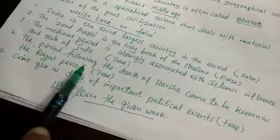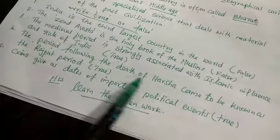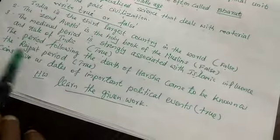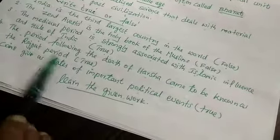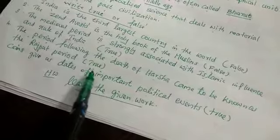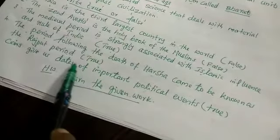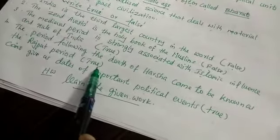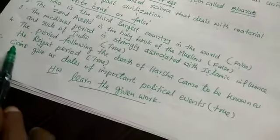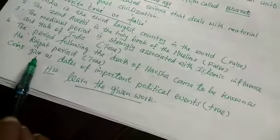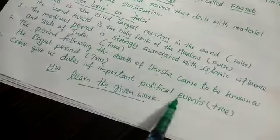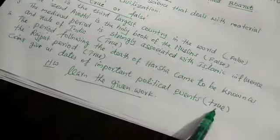Number 4. The period following the death of Harsha came to be known as the Rajput period. That statement is true — T-R-U-E. Number 5. Coins give us dates of important political events. That is also true.